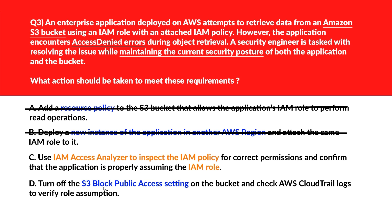Option D says: turn off the S3 block public access settings on the bucket and check AWS CloudTrail logs to verify role assumption. Disabling block public access weakens the bucket's protection and has nothing to do with role-based access errors. Let's eliminate it. Option C is the right answer.